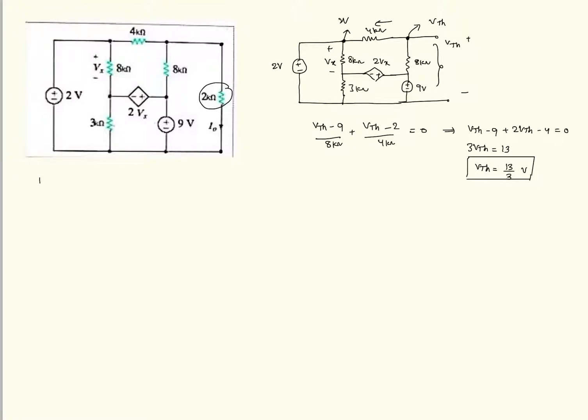Now let us solve Rth. To solve Rth in a circuit where both the independent and dependent voltage sources are present. The procedure is to calculate Rth. It is Vth by Ise. Ise is nothing but short circuited current.